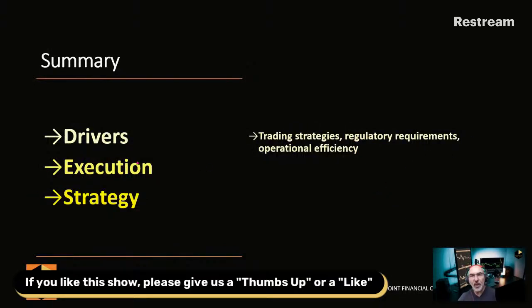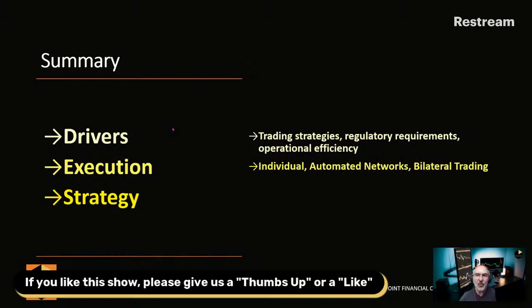So a quick summary of what we talked about today. One was the drivers of the business — there are trading strategies in the market that end up creating borrowing demand, which creates the need to borrow securities. There are regulatory requirements like the HQLA collateral transformation I talked about, where banks need to pile up and store liquidity in the event of a crisis. And then the third part, where it's about operational efficiency to smooth the settlement process. For securities lending trading, there are three different ways of doing it: individual trading, automated networks, and bilateral trading.